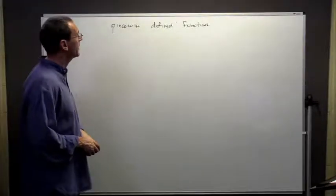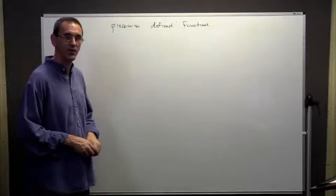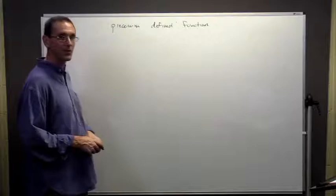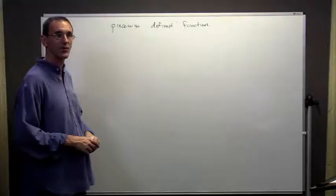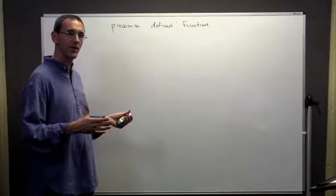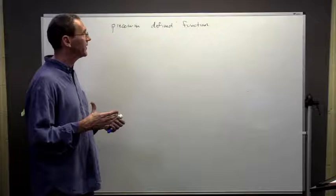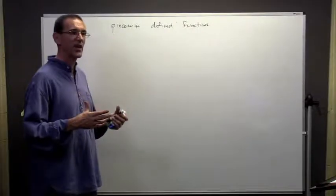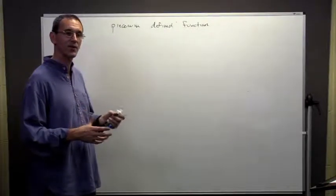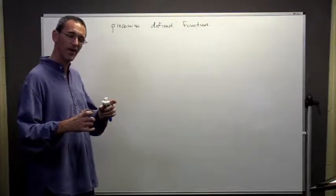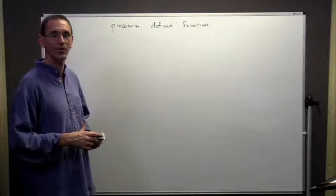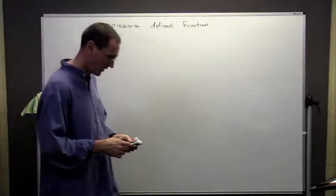We're going to talk about some notation. In particular, we're going to talk about something called piecewise defined functions. What happens in practice is there are times when a function can't easily be described by a single function, but it looks like different functions in different places depending on where you are in the domain.